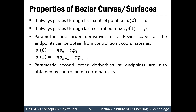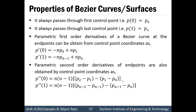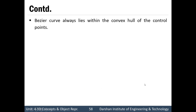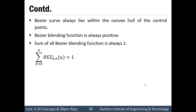Similarly, the parametric second-order derivative can also be calculated using the control point positions. P''(0) equals n(n-1) times [(P2 minus P1) minus (P1 minus P0)], and P''(1) equals n(n-1) times [(Pn minus 2*Pn-1) minus (Pn-1 minus Pn-2)]. Next property: a Bezier Curve always lies within the convex hull of the control points — that is, the convex polygon enclosing all control points. Also, the Bezier blending function is always positive; it cannot be a negative value.